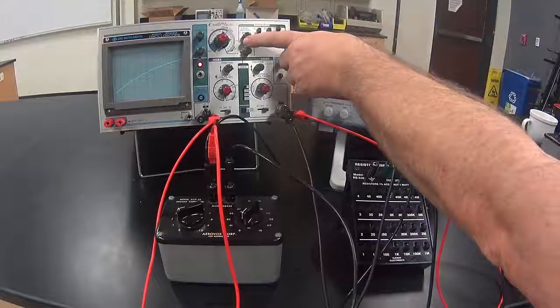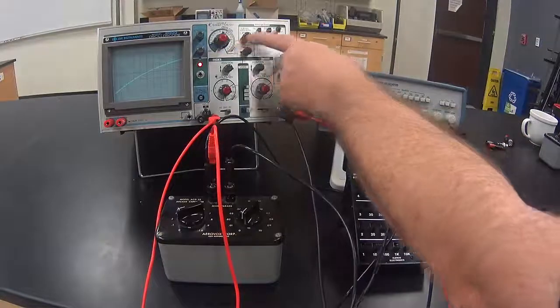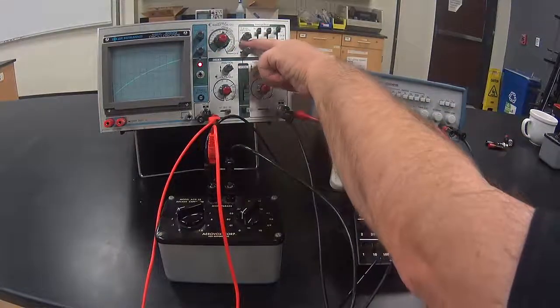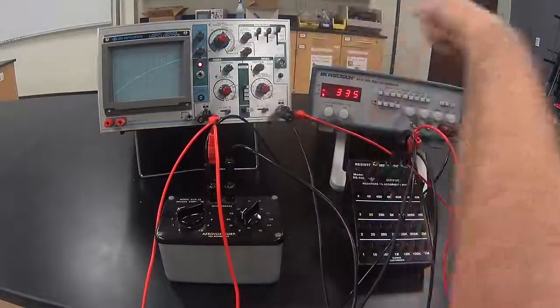Then I multiply times the time per division setting on the time sweep to get how long it was to charge halfway. This time is a measure of how long it takes the capacitor to charge halfway. We will call this time T one half.